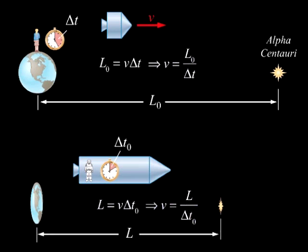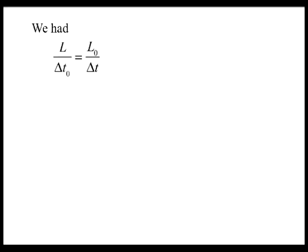One thing, other than the speed of light, that the two observers can agree upon is the relative speed v between them. And we can write L divided by Delta T0 equals L0 divided by Delta T. We can rearrange this to give L equals L0 times Delta T0 divided by Delta T.